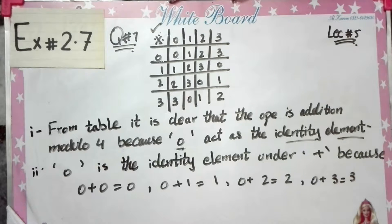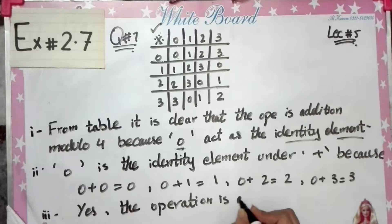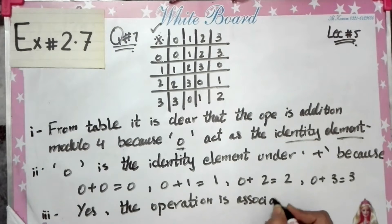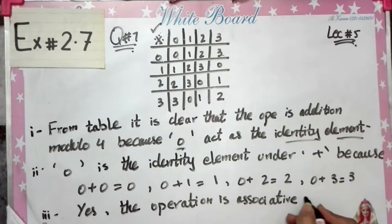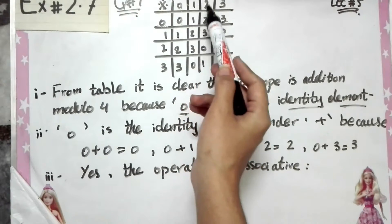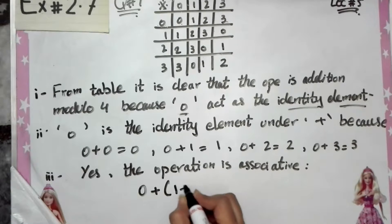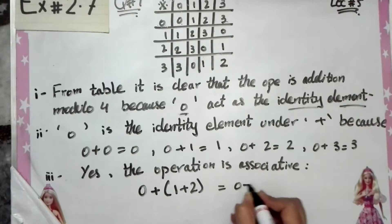Next we are asked: Is the operation associative? Yes, the operation is associative. Why? We will prove it. We take three values, for example 0, 1, and 2. We will compute (0+1)+2 and compare it with 0+(1+2).